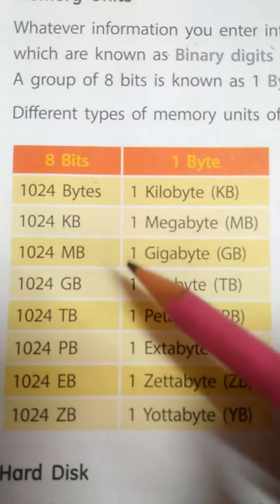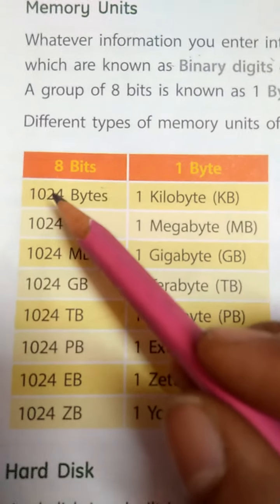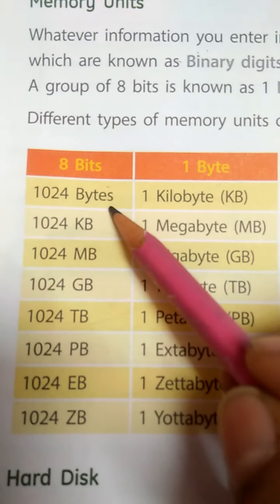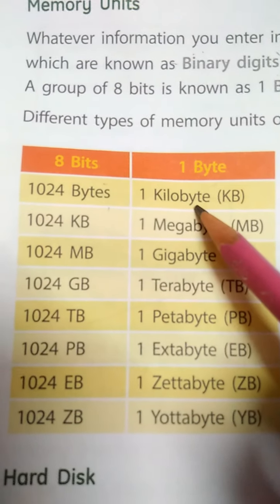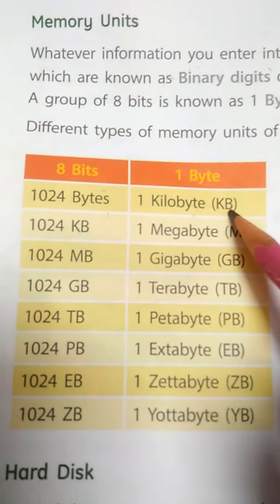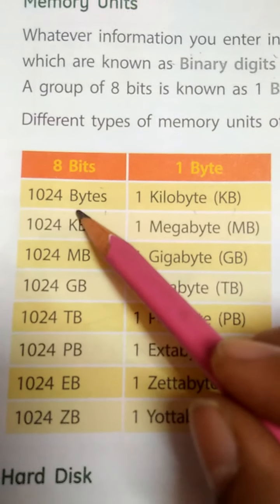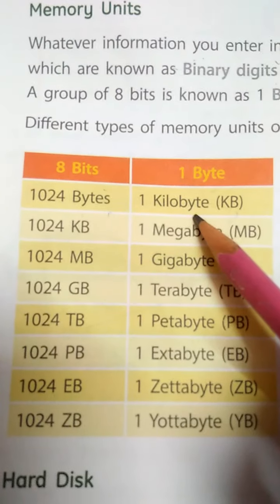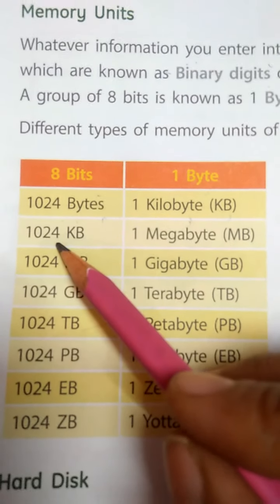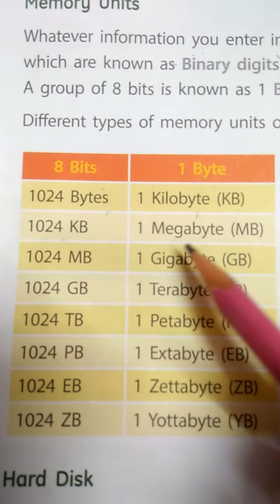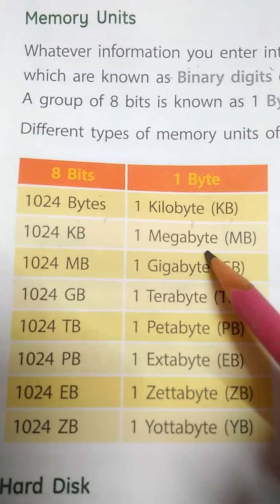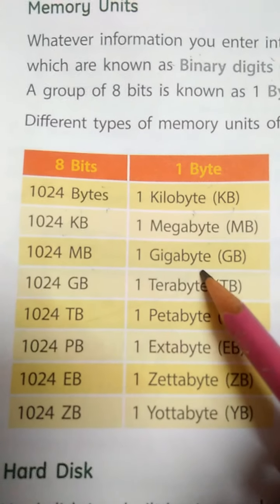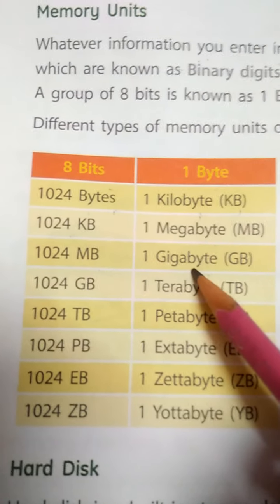So in the same way, the storage capacity units are: 1024 bytes is equal to one kilobyte (KB). 1024 KB is equal to one megabyte (MB). 1000 MB is equal to one gigabyte (GB).